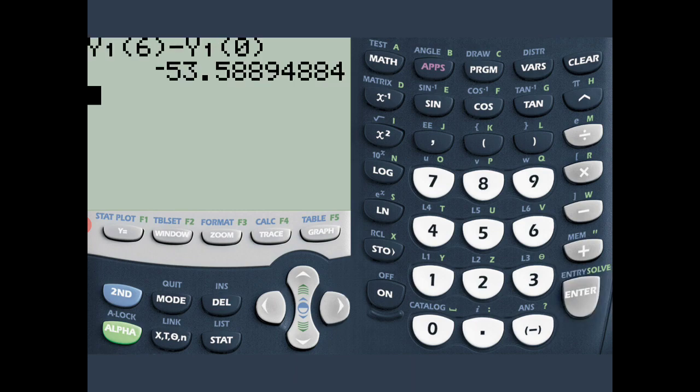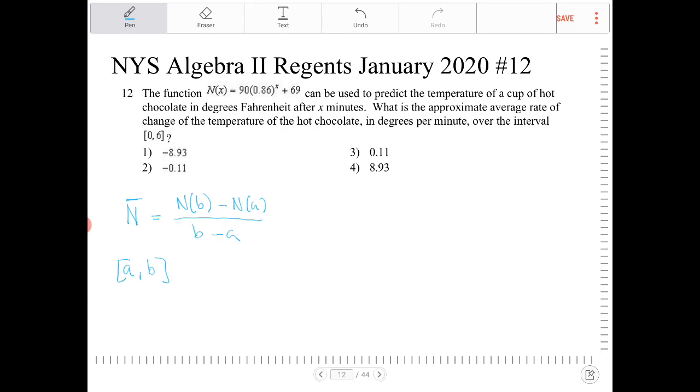And that right there is the numerator of the expression that we're trying to find. So that's N of b minus N of a, or N of 6 minus N of 0. And we're going to divide that by 6. And we end up with negative 8.93. So this ends up being negative 8.93 or option 1.